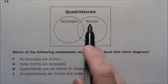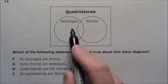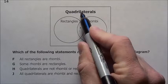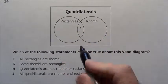There are specific kinds. There are rectangles and rhombi. Notice there is an intersection. There are some shapes that are types of quadrilaterals that are both a rhombi and a rectangle.